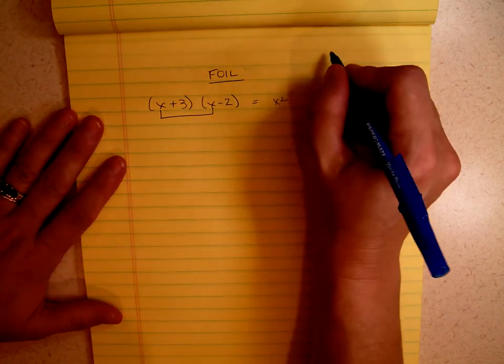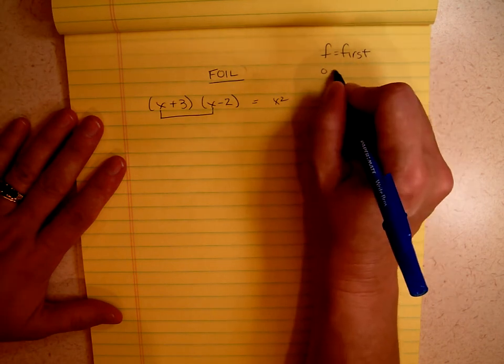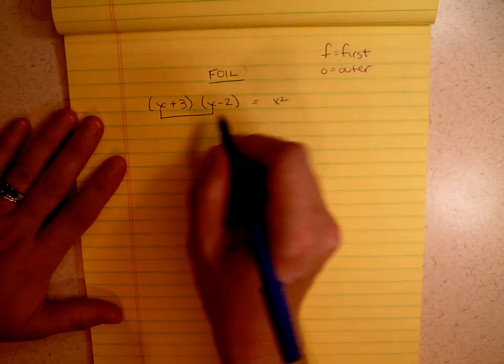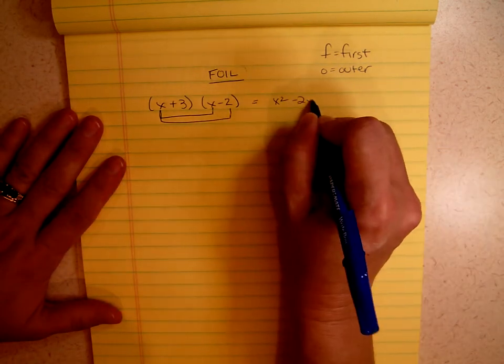Then comes O. O stands for outer. The outside of both of them, so x is an outer and minus 2 is an outer. So we're going to get minus 2x.